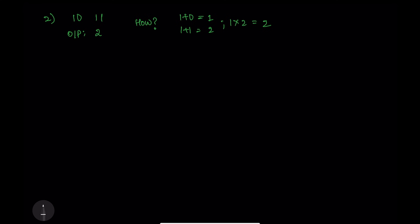The second question is a bit tricky but also easy — you need to do a specific task some number of times. We have a as 10 and b as 11, and the output is 2. You need to find the digit sum: for a=10, digit sum is 1+0=1; for b=11, digit sum is 1+1=2. Then find the product of those results: 1 × 2 = 2.